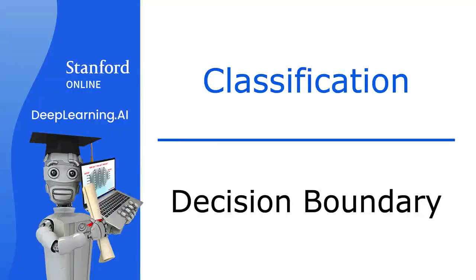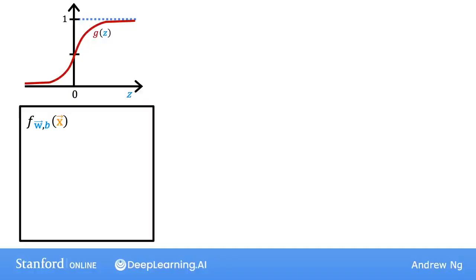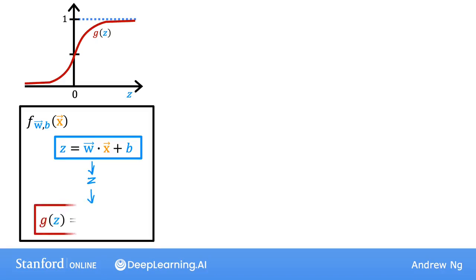In the last video, you learned about the logistic regression model. Now let's take a look at the decision boundary to get a better sense of how logistic regression is computing its predictions. To recap, here's how the logistic regression model's outputs are computed in two steps. In the first step, you compute z as w dot x plus b. Then you apply the sigmoid function g to this value z, and here again is the formula for the sigmoid function.